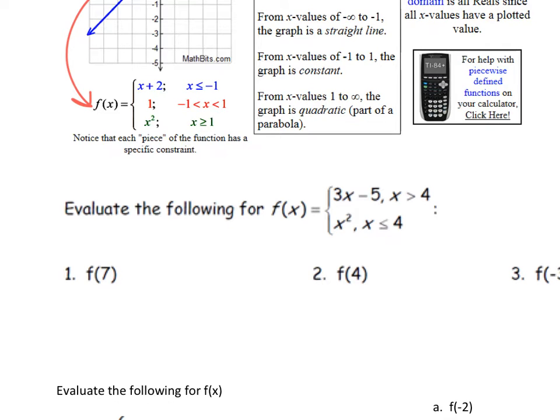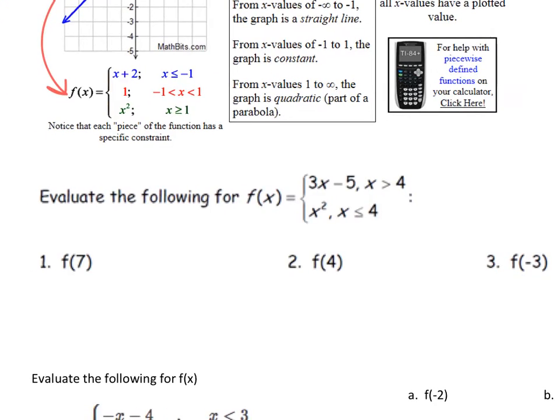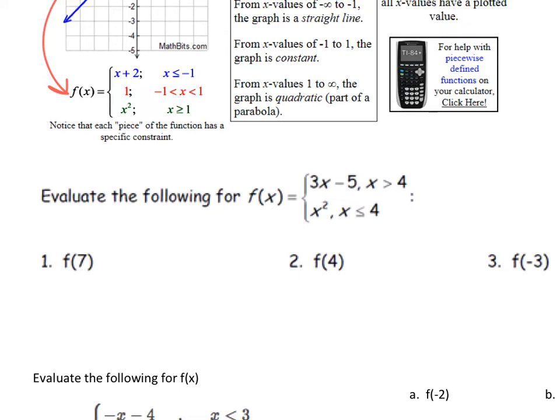So let's do our first example. So whenever we evaluate, all we're going to do is basically rely on our domain. So evaluate the following for f(x) equals 3x minus 5 for all values of x greater than 4 and x squared for x is less than or equal to 4. So remember, all we're doing with these values is we're simply substituting them into our equation. So I'm actually going to color code this. I'm going to call this my red equation and I'm going to call this my blue equation.